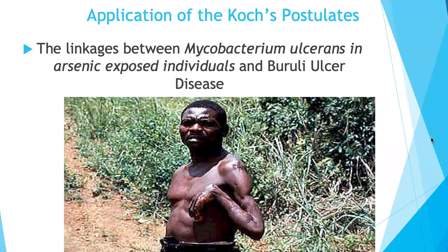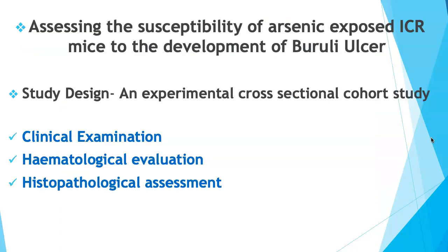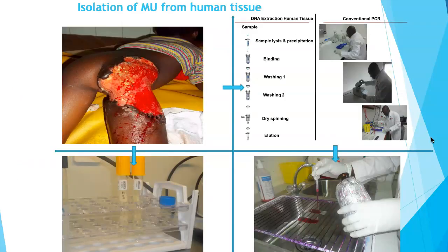The disease normally starts as a painless, firm pimple. If left untreated it progresses to an ulcer covering an entire area of the body. Even without treatment some healing occurs, but patients are left with permanent contractual deformities. To study susceptibility, the researcher designed an experimental cross-sectional cohort study with three components: clinical examination, hematological evaluation, and histopathological assessment. The inoculum required bacterial extracts, mice, and arsenic-containing water. A sterile swab was used to collect samples from margins of active Buruli ulcer lesions.